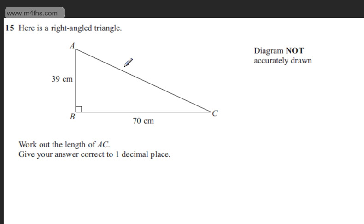So this is a right-angled triangle, and we can see that AC is the hypotenuse, and we have the two shorter sides, AB and BC.